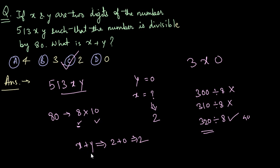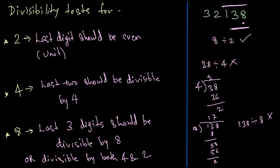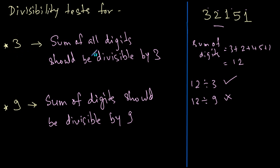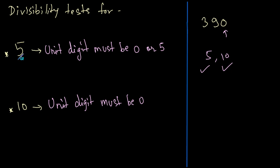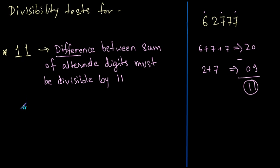Let's revise all the rules. For 2: the last digit should be even. For 4: the last 2 digits should be divisible by 4. For 8: the last 3 digits should be divisible by 8. For 3: sum of all digits should be divisible by 3. For 9: sum of all digits should be divisible by 9. For 5: unit's digit must be 0 or 5. For 10: unit's digit must be 0. For 11: take alternate digits, sum each group, find their difference — if that difference is divisible by 11, the number is divisible by 11.